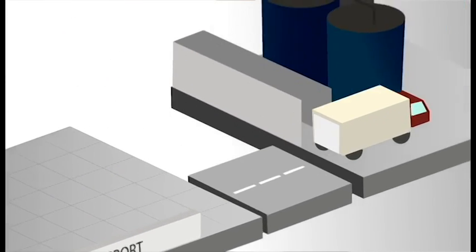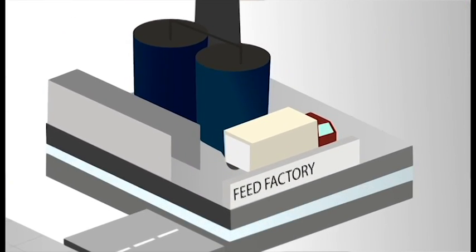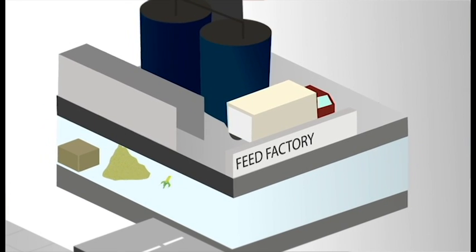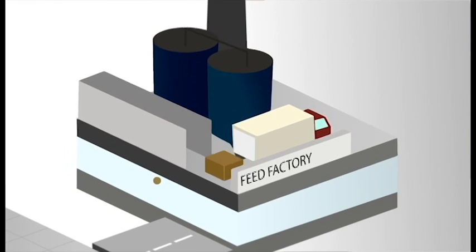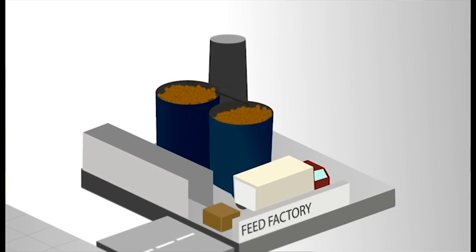Once at the fish feed factory, the fish meal and fish oil are mixed with other ingredients such as soya meal, maize and vegetable oils to produce the optimum feed mix for the species of fish or crustacea that eats it.